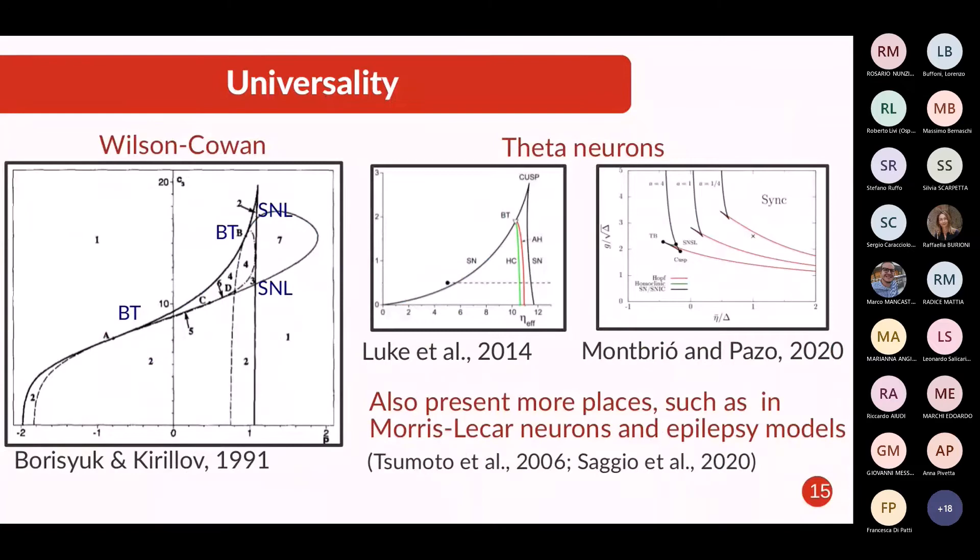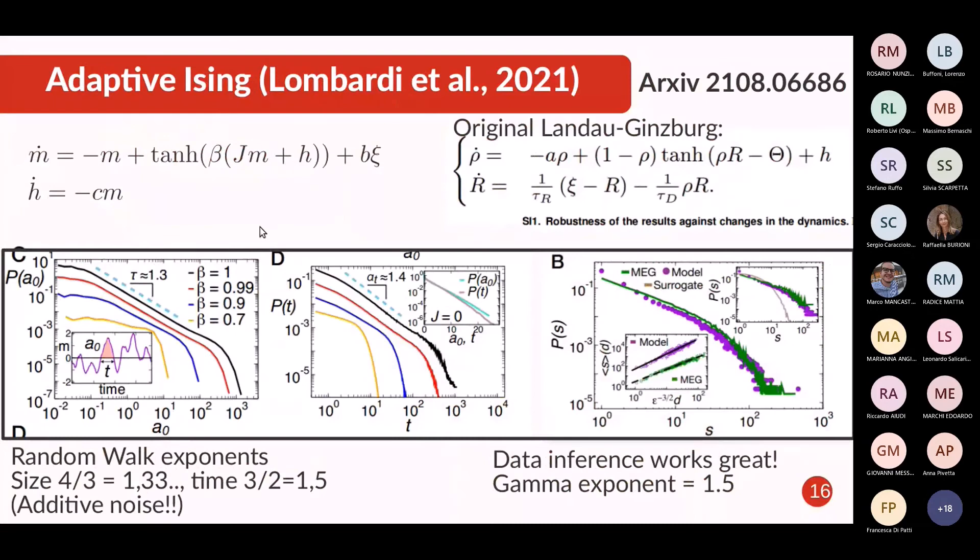However, we are happy because this kind of dynamics is not something particular of our system. It's something that you can find in many other neuroscience systems like the Wilson-Cowan dynamics has a very similar phase diagram. Also theta neurons, when you have excitatory and inhibitory theta neurons, they also display very similar dynamics and very similar phase diagrams. So this is something that you can find actually in many places if you look a bit for them in neuroscience. So it is not something very particular of our model and can be found in many neuroscience setups.